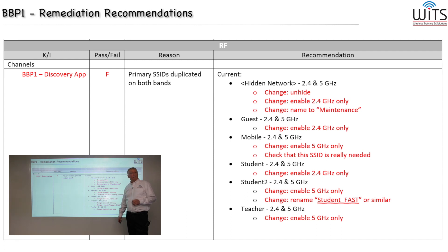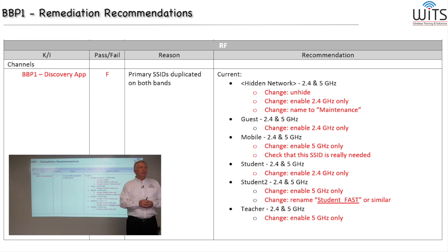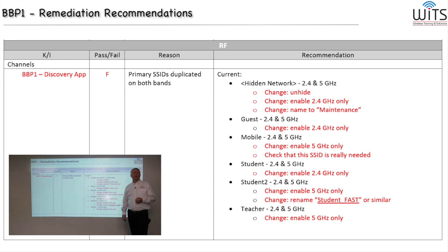That's one way to control which band clients connect to. There are other methods — some manufacturers offer 'band steering' — and if it works for you, that's fine. However, my experience is that band steering doesn't always give the level of control I want. By hard-coding the SSID to a specific band, there's no doubt: 2.4 GHz-only devices go on 2.4, and dual-band capable devices go on 5 GHz.